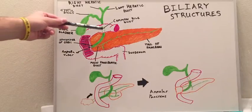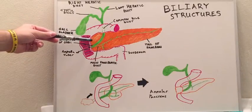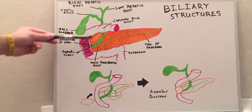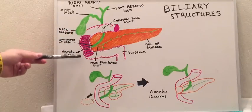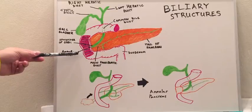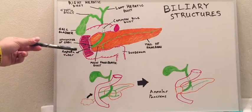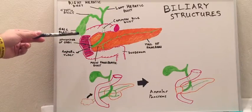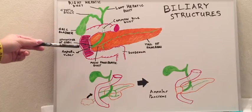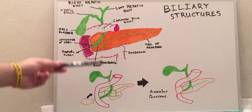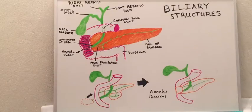Together they join at the sphincter of Oddi and the ampulla of Vater, which dumps out into the second portion of the duodenum where it secretes its bile. This bile then enters the duodenum and helps to emulsify fat throughout the duration of the intestines.